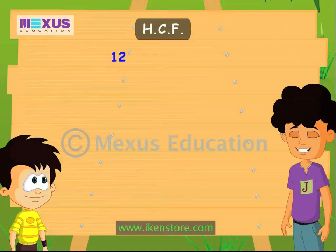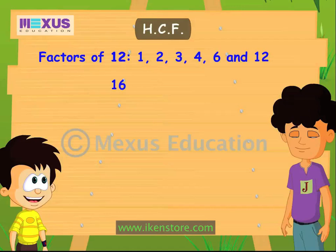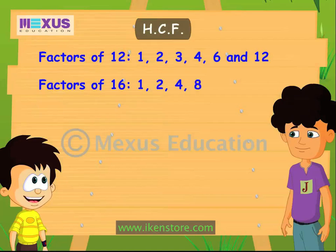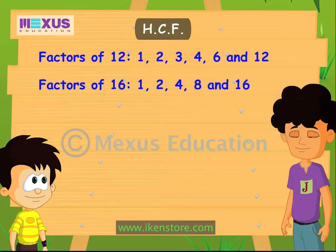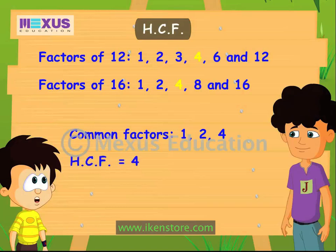Can you find the HCF of 12 and 16? The factors of 12 are 1, 2, 3, 4, 6, and 12. The factors of 16 are 1, 2, 4, 8, and 16. Now find the common factors of 12 and 16. The common factors are 1, 2, and 4. So the highest common factor of 12 and 16 is 4.